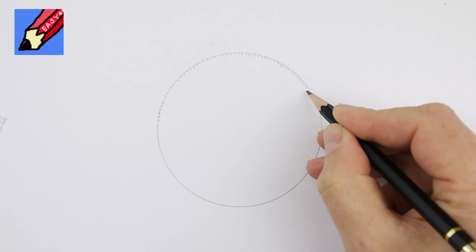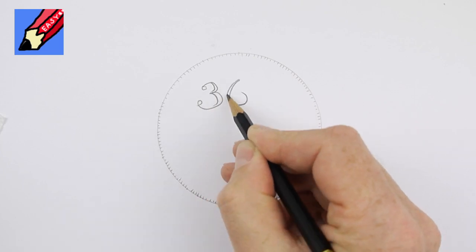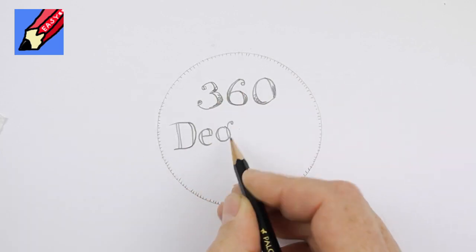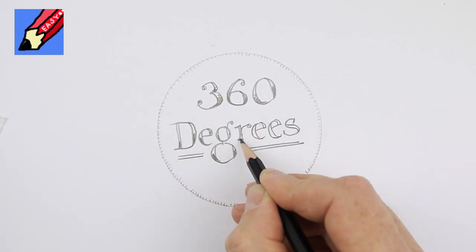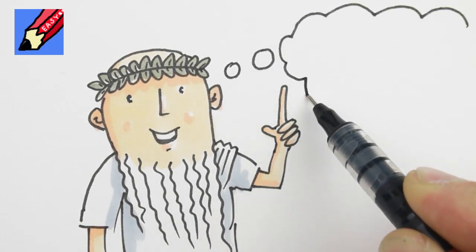Now look at this circle. If you put all the angles inside it together, they add up to 360 measuring thingy bits that we will call degrees. Euclid really was good at thinking up names for things.